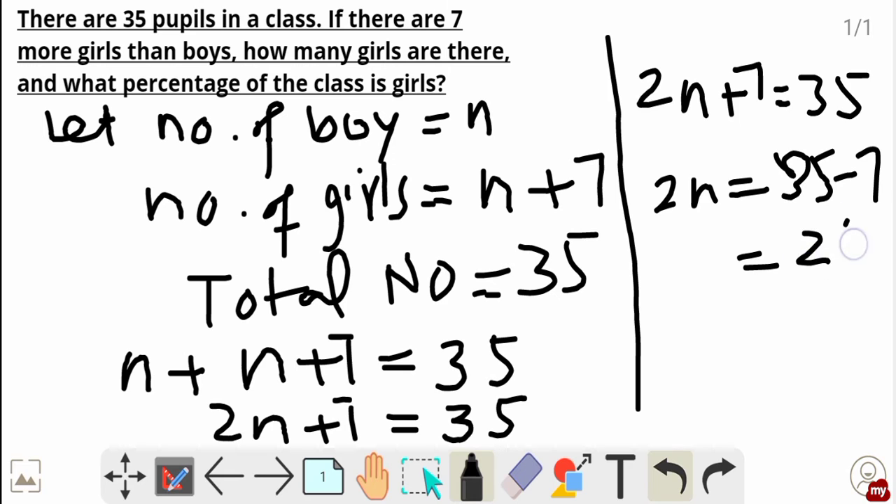It becomes 2n plus 7 is equal to 35. So 2n is equal to 35 minus 7, which becomes 28.